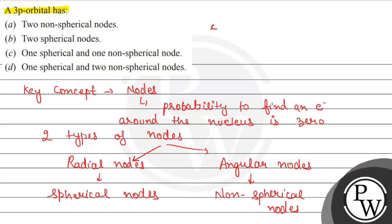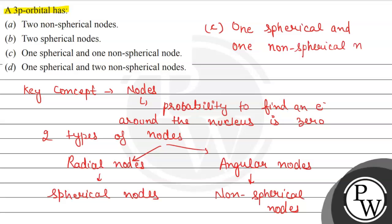So let us write the final answer of this question: option C — 1 spherical node and 1 non-spherical node. Options A, B, and D are the incorrect ones. So this was the whole solution. Hope you understood it well. Best of luck.